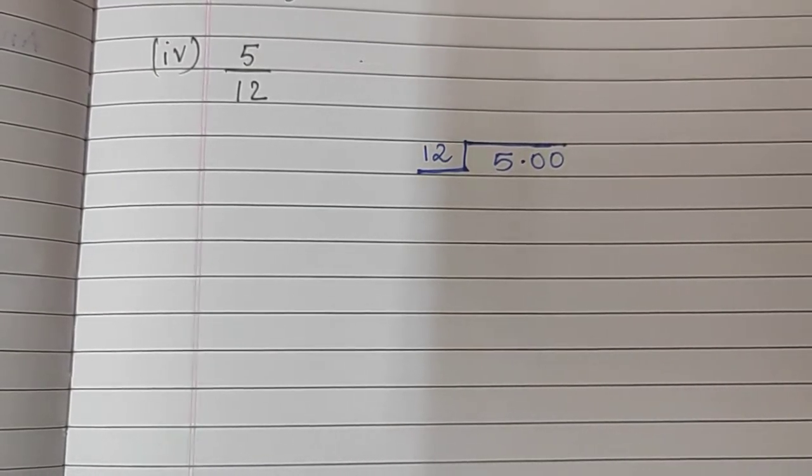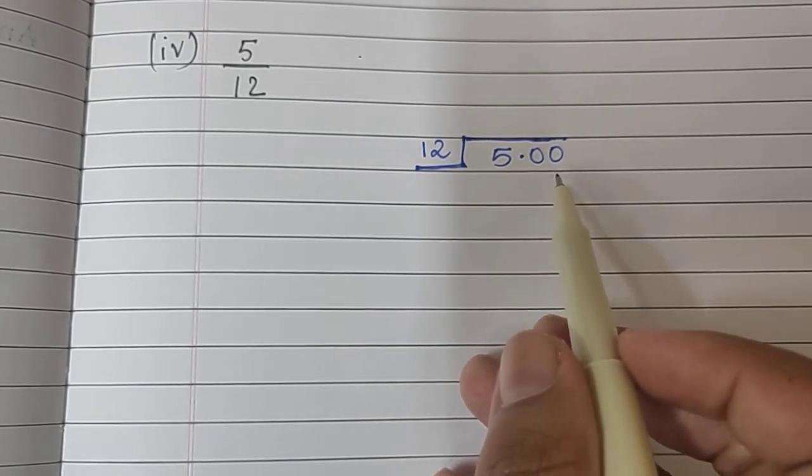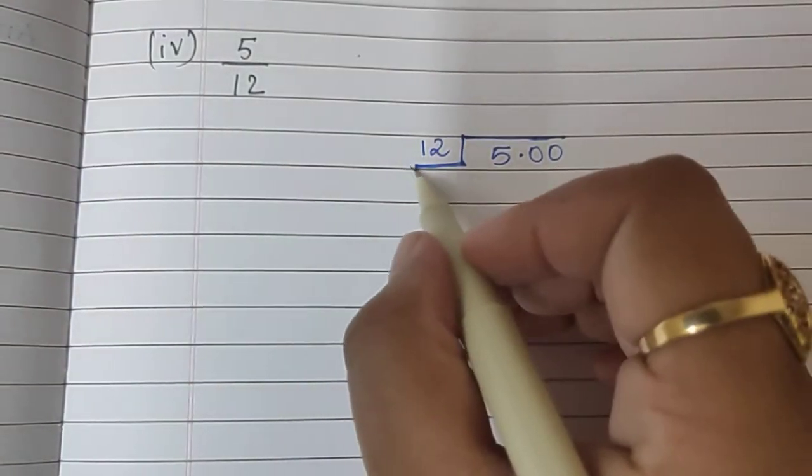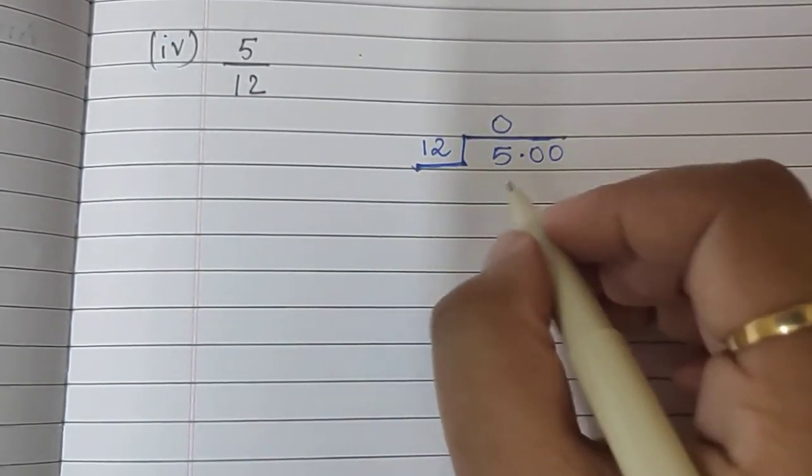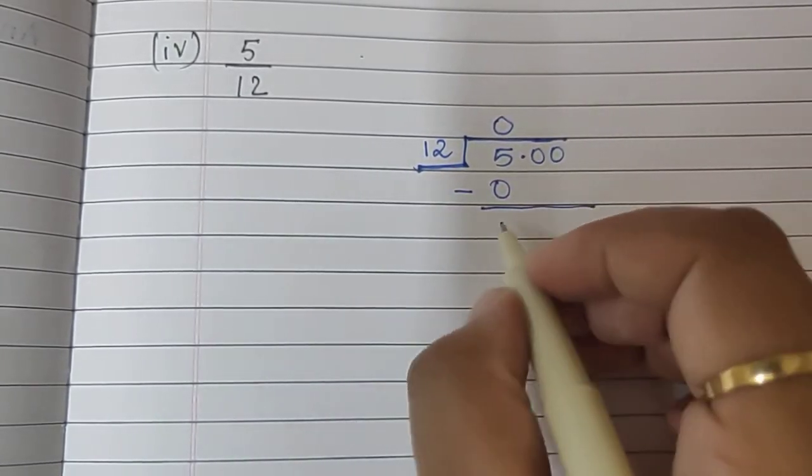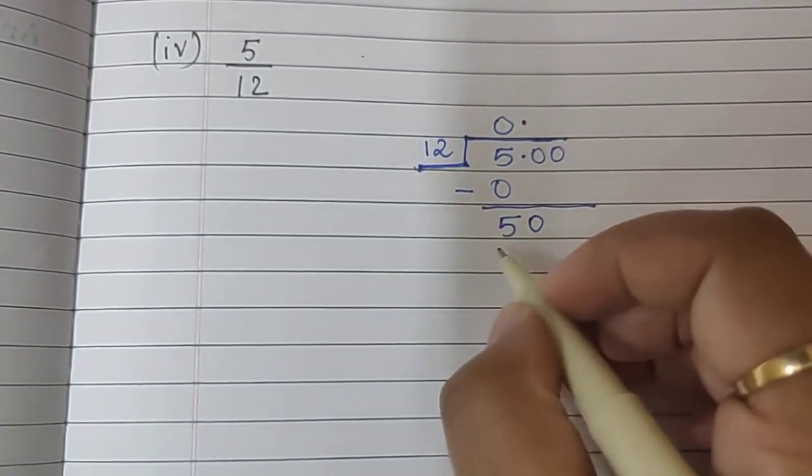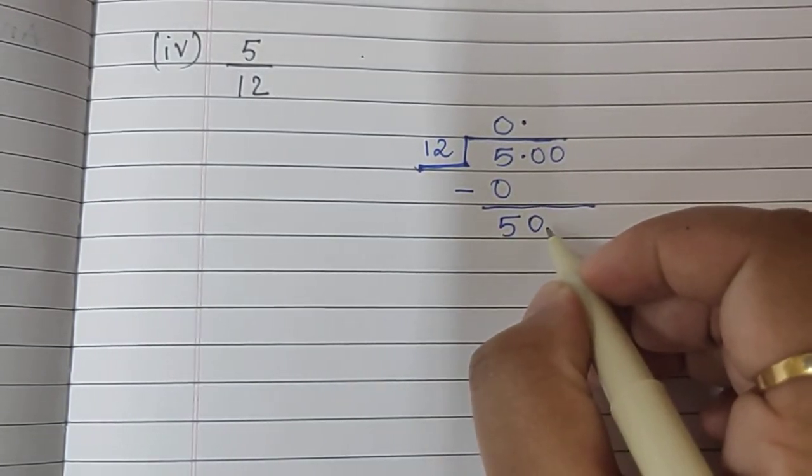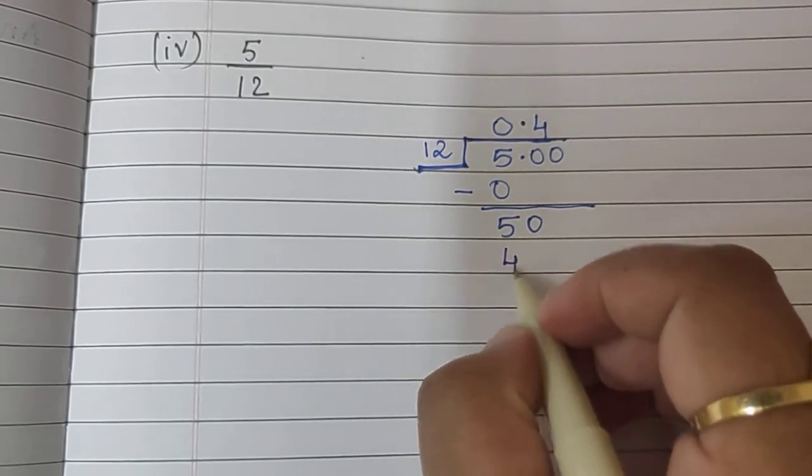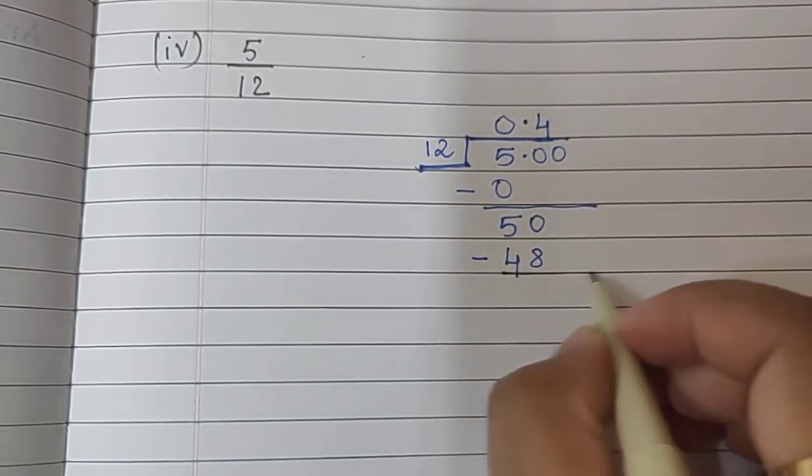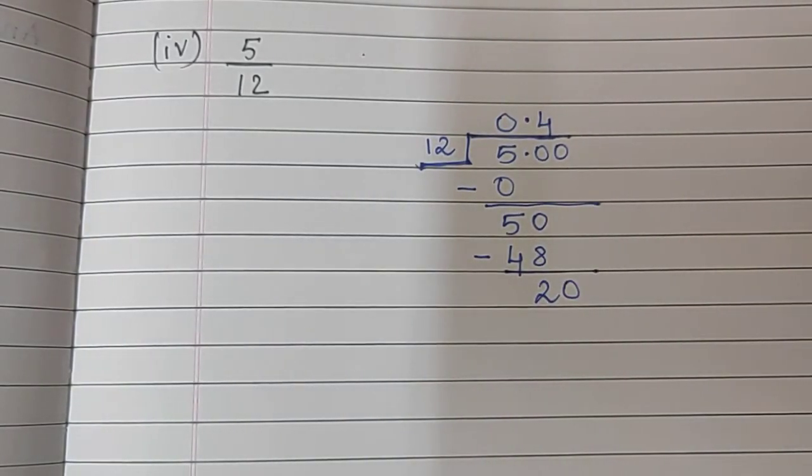Sum number 4 is 5 upon 12. So, we have written 12 here and 5.00. Let's solve it. Again, 5 is smaller number than 12. So, what we will take is 0 here. 12 zeros are 0 minus, I will write 5. We will put up the decimal sign and bring the 0 down. This becomes 50. 12, 4's are 48. If we subtract, we get 2. Let's bring the other 0 down. It becomes 20.